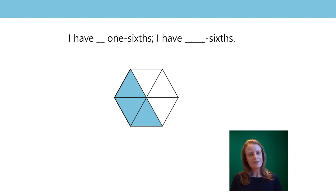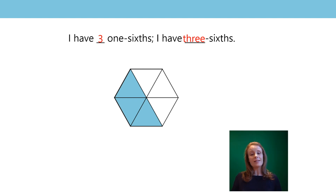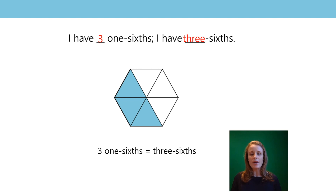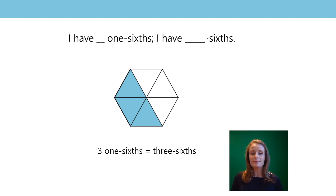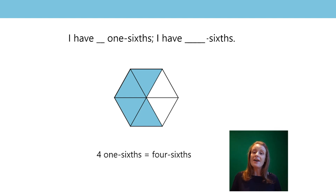As I go round my hexagon, I've filled in another one sixth. Count how many I've got now. I've got three one sixths, so I now know I can say that as three sixths. Say that stem sentence with me: I have three one sixths, I have three sixths. Three one sixths equals three sixths — it's two ways of saying the same thing. Now look what's happened — I've added another one sixth. How many have I got altogether now? I've got four one sixths, so I now say I have four sixths. Four one sixths is equal to four sixths.